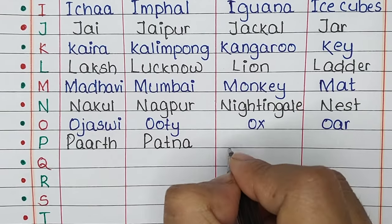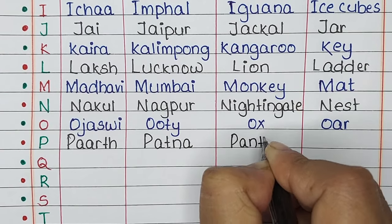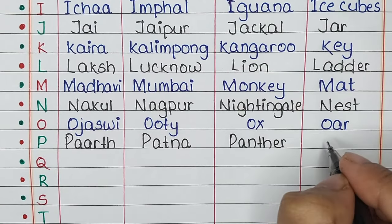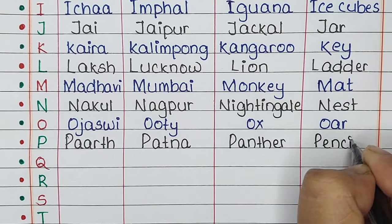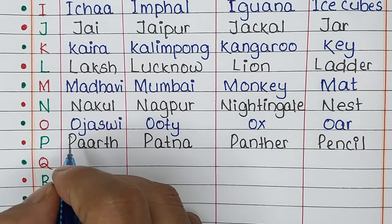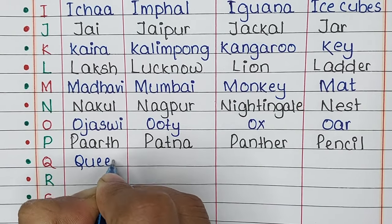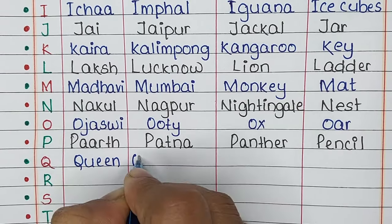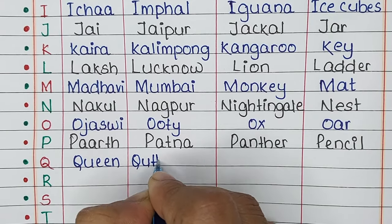Next is letter P. The name is Parth, the place is Patna, the animal is Panther, and the thing is Pencil.